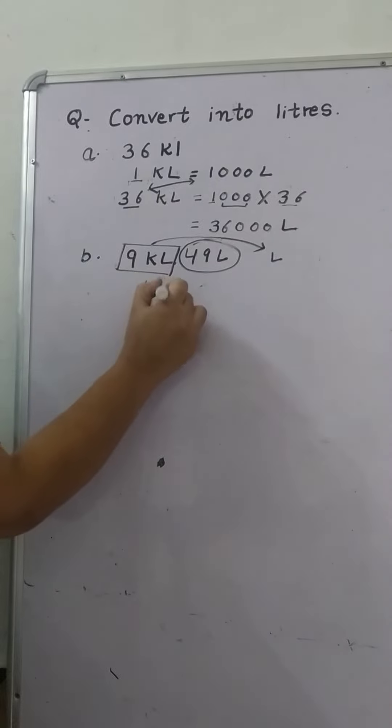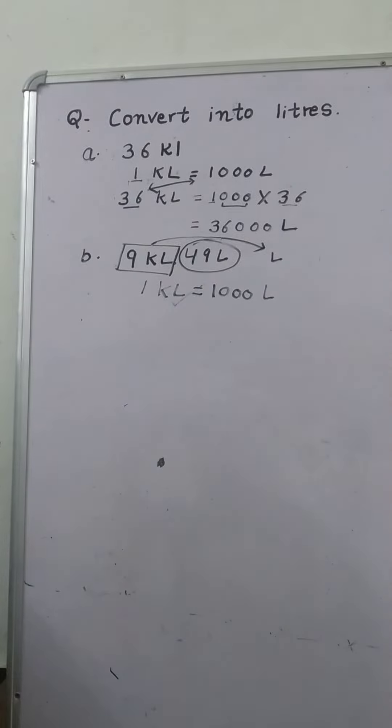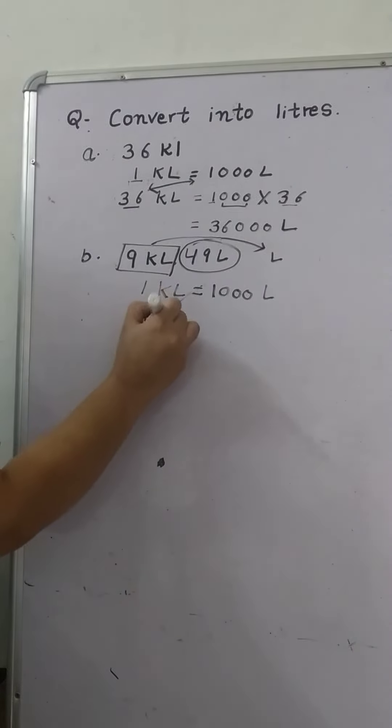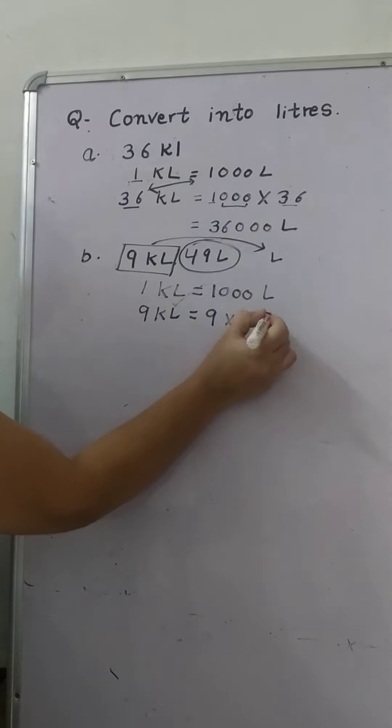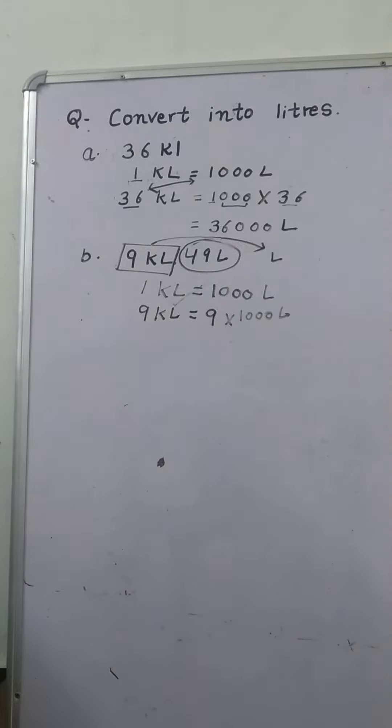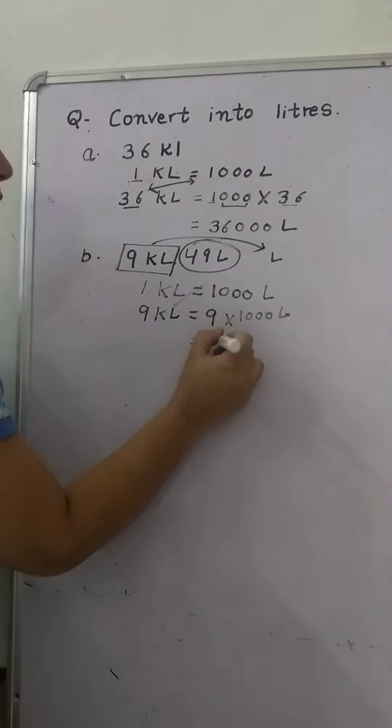1 kiloliter is equal to 1000 liter. 9 kiloliter is equal to 9 multiply 1000. It will be 9000 liter.